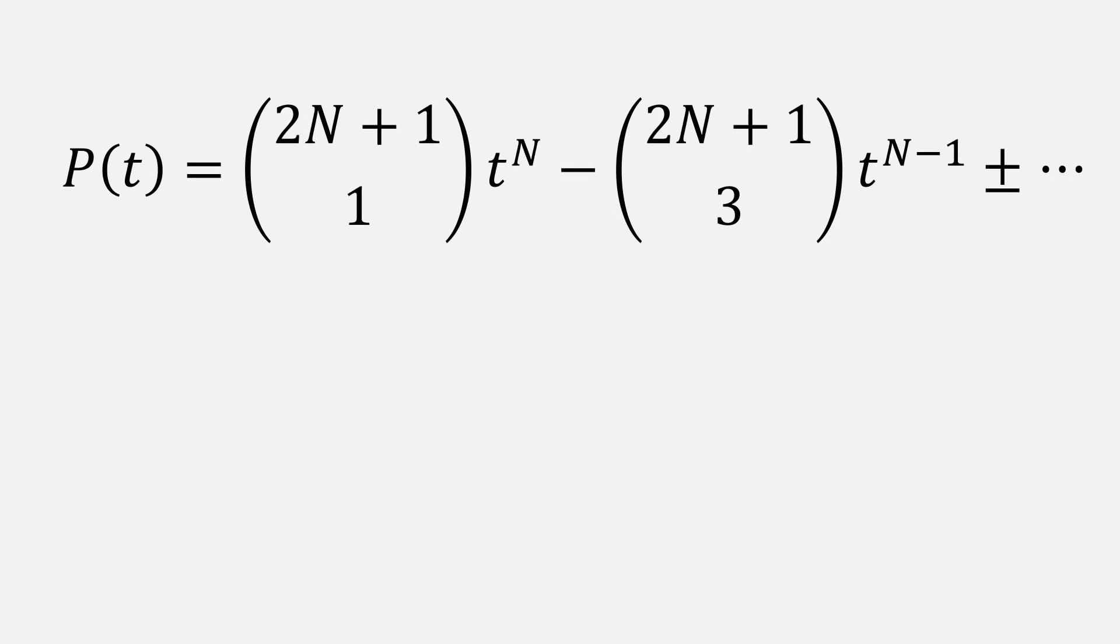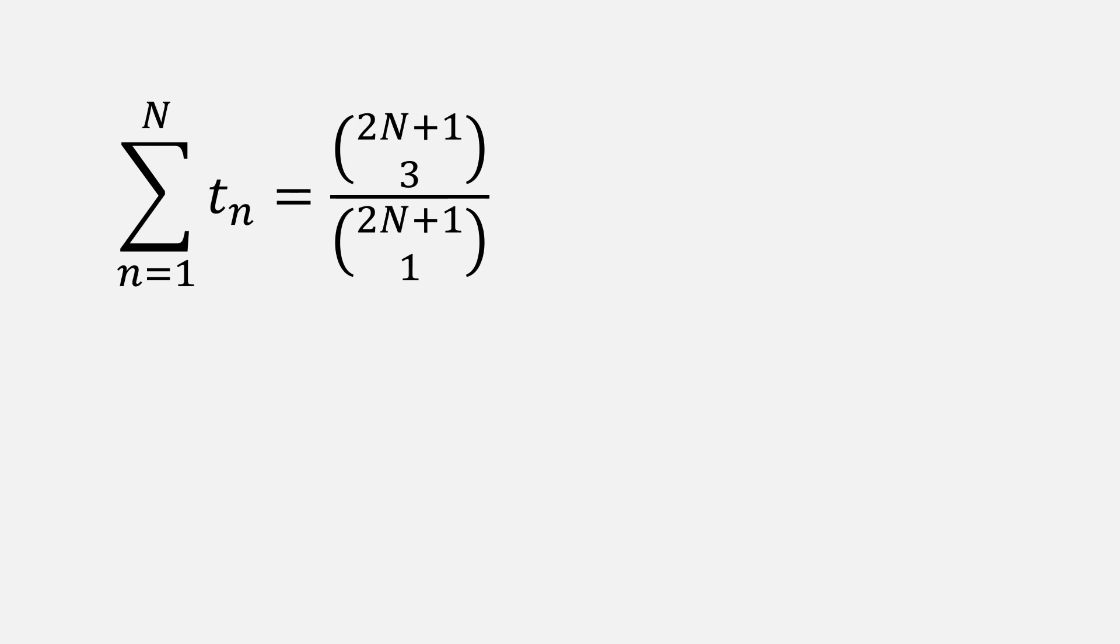So in this case, the sum of the n roots of p of t would be the negative of the second coefficient divided by the leading coefficient. That expression can easily be simplified using the formula for n choose k. I'll leave it to you as a fun algebra exercise to show that it equals 2n times 2n minus 1 over 6.